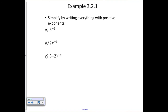Let's simplify by writing everything with positive exponents. We have three to the minus two. To write this with positive exponents, we move it across the division bar, so it becomes one over three to the positive two. Three squared is nine, so we get one over nine.